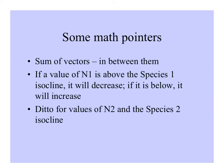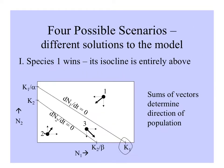Some of you might have taken linear algebra, but if not, when you have two vectors, their sum is the line in between them. Remember that if the value of N1 is above its isocline it will decrease; if it's below, it will increase — and the same for values of N2 and the species 2 isocline. Here we've put the two isoclines together on the same phase plane.